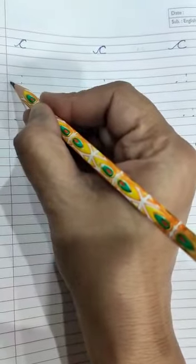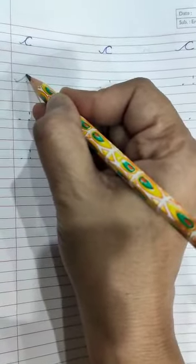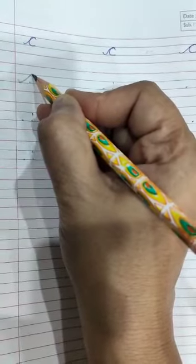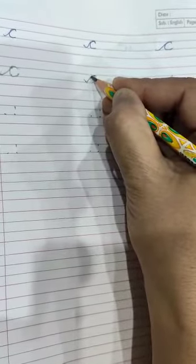So you have to start from here, make a slanting line upward, make semicircle and like this. Isn't it easy? Make a curve and slanting line.